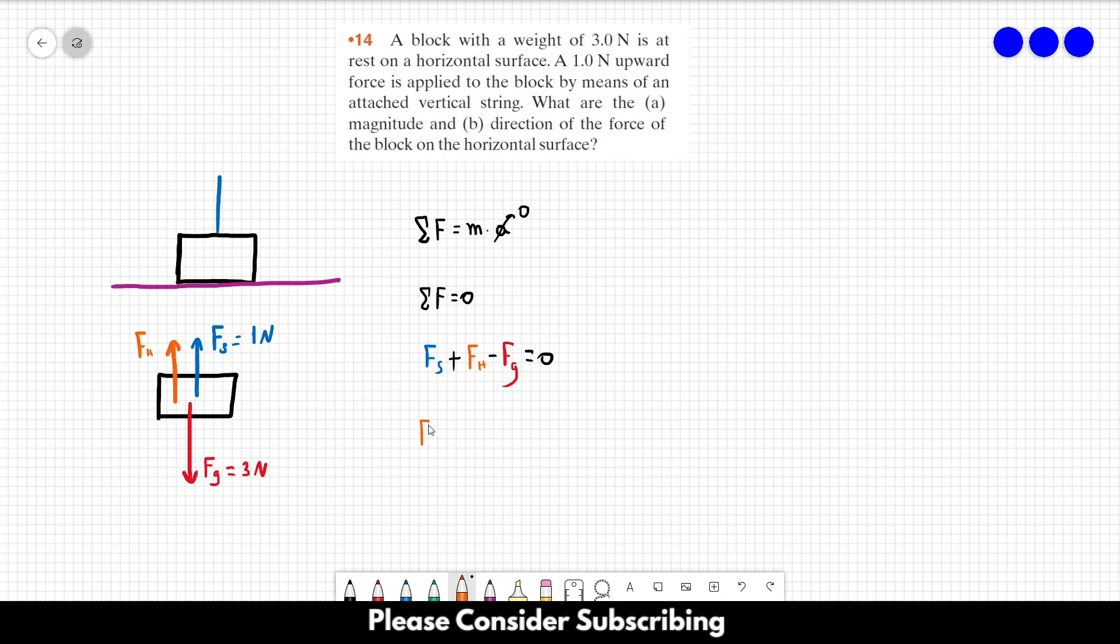So Fh is equal to Fg minus Fs. So we have that Fh is equal to three minus one, which is equal to two newtons.